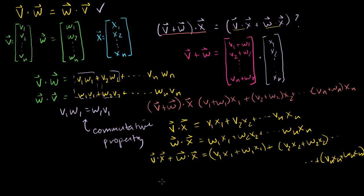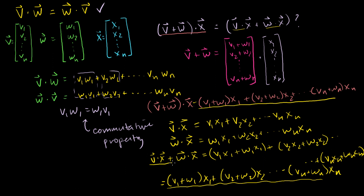This is equal to, let me write it here, we can just take the x out, factor the x out: v1 plus w1 x1, plus v2 plus w2 x2, all the way to vn plus wn xn. Which we see, this is the same thing as this thing right here. So we just showed that this expression is the same thing as that expression, or that the distributive property seems to, or does apply, the way we would expect to the dot product.